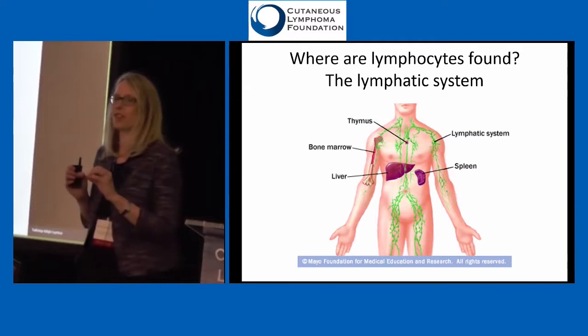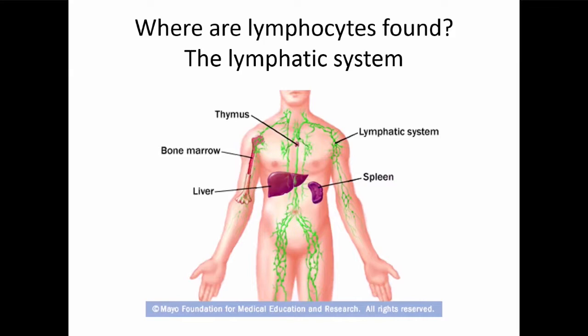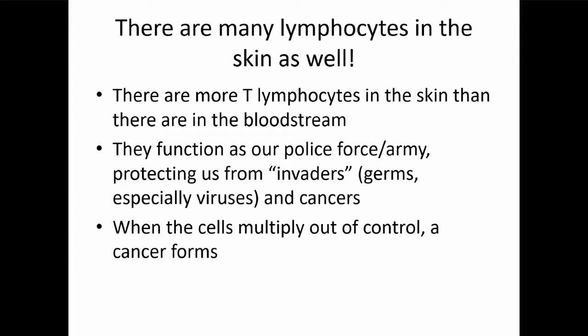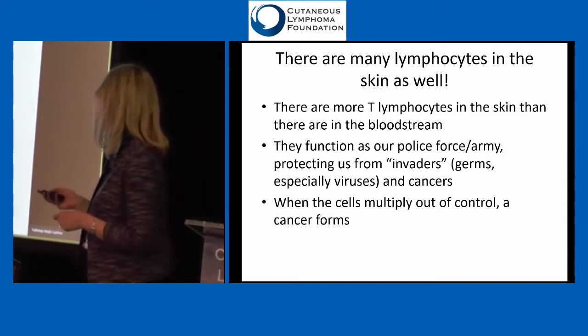Lymphocytes are everywhere in our body. They're like our armed services or police force, patrolling through the body at the different interfaces where we may encounter viruses, searching for abnormal cells throughout our body. There are more in our skin than anywhere else, but they are also in our lymph system — the lymph nodes and lymphatics, the thymus where they go to school to learn how to be a lymphocyte, the spleen, which is another major organ full of lymphocytes, and our bloodstream. There are more T cells in the skin than in our bloodstream. It's when these cells multiply out of control or fail to die off — which is a normal part of life for cells — that we have cancers that form.